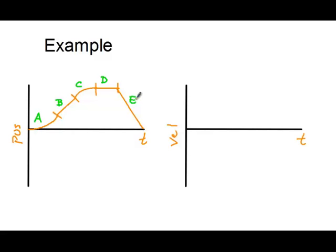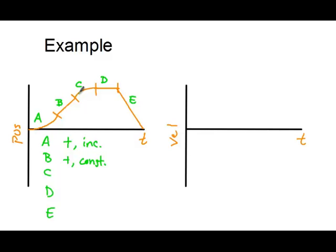Looking at each section: Section A — the object is going faster and faster in the positive direction, so it's a positive increasing velocity. Part B — it's a straight line, so that's a positive constant velocity. Part C — still going in the positive direction, still moving further away, but going slower and slower, so it's a positive but decreasing velocity. Part D — a horizontal line, meaning the object is at rest during that time. Part E — a negative but straight line, so it's a negative constant velocity.